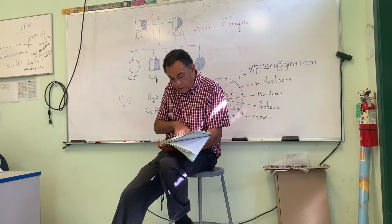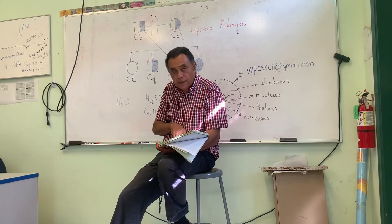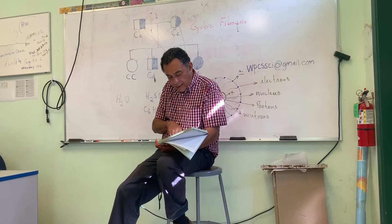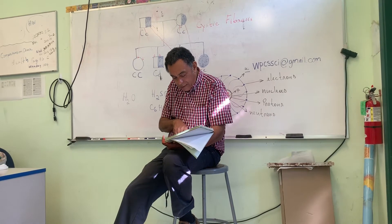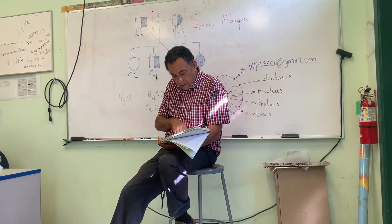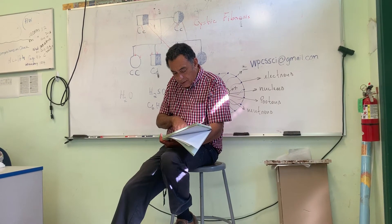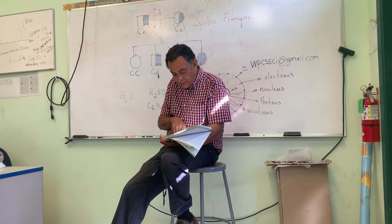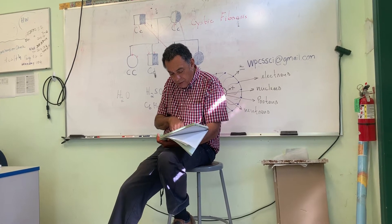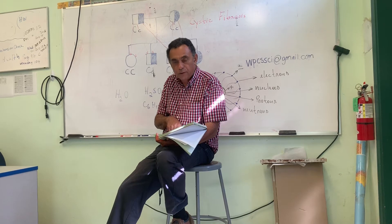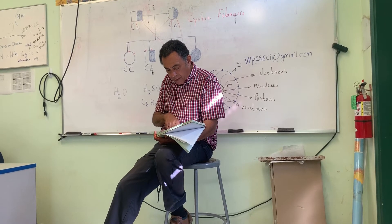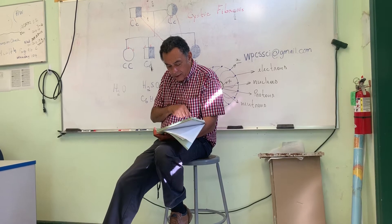Explain the difference between daddy long legs and the spider. So, a daddy long leg has only two eyes. Spiders usually have eight eyes. Daddy long legs lacks a constriction or waist between its two body regions. Spiders have a constriction; daddy long legs does not have spinnerets, spiders do.